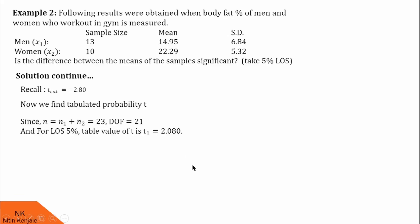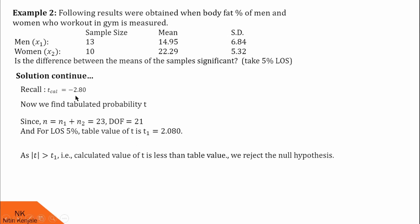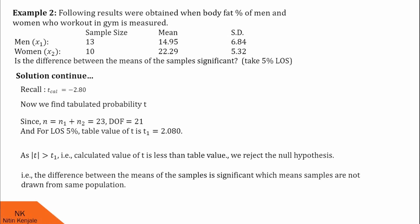In the last step, we compare the calculated value and critical value. We see the mod of the calculated value is greater than the critical value. So we should reject the null hypothesis, and when we say so, we are saying there is a significant difference between the means of two samples. I hope you understood this example as well.